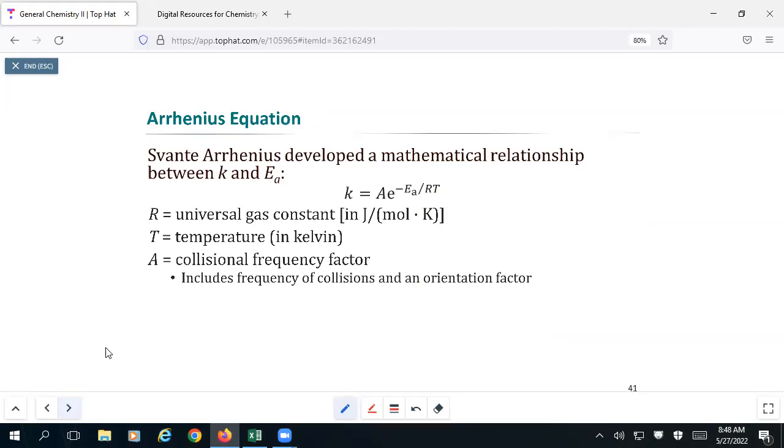The Arrhenius equation looks like this. It is a relationship between K, the rate constant, and three other factors: activation energy Ea, temperature T, and A, which is a statistical quantity called the collision frequency factor. Basically, it's that adjustment we make for the fact that all collisions are not necessarily successful collisions.